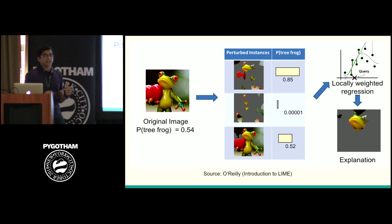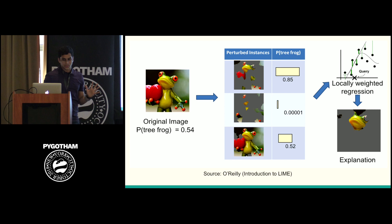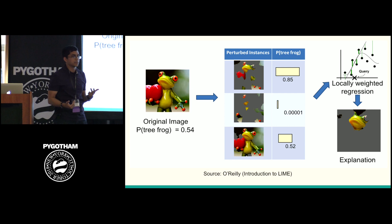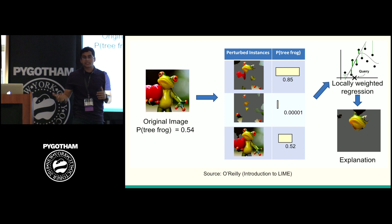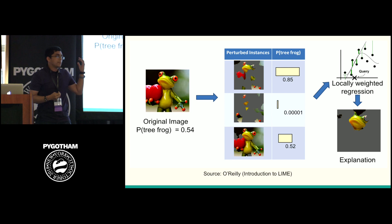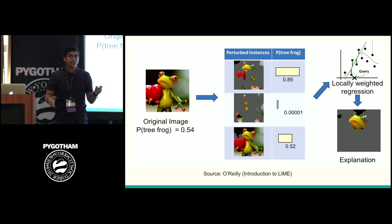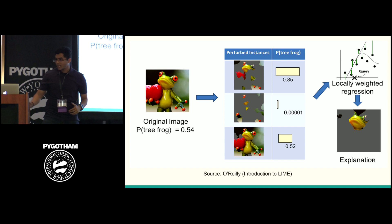LIME has been around since 2016 and is sort of the big popular tool when people talk about model explainability. But LIME has some issues. Because it uses linear regression as a surrogate behind the scenes, it has the same problems as linear regression: it's bad for highly interactive data and bad with heteroscedasticity. If your data is highly interactive, like a 17-layer autoencoder, LIME really can't capture all those interactions between terms.